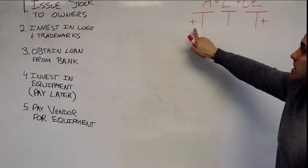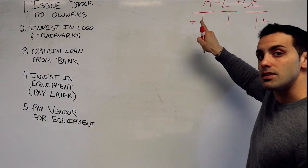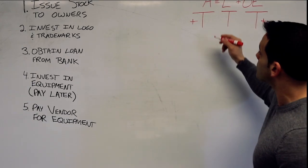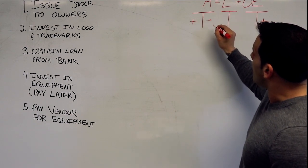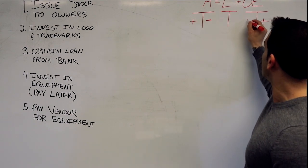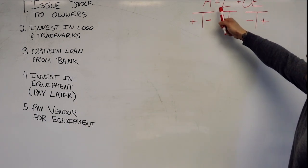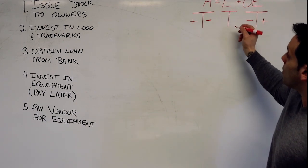And this is because assets increase with a debit and owner's equity increases with a credit. The opposite would be true. And liabilities follow owner's equity because they're on the same side of the equation.